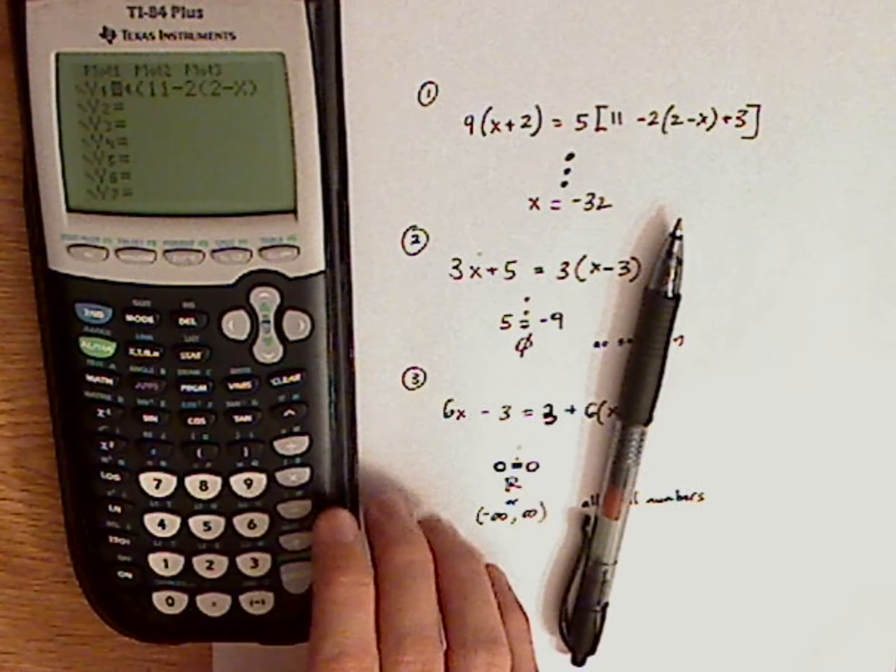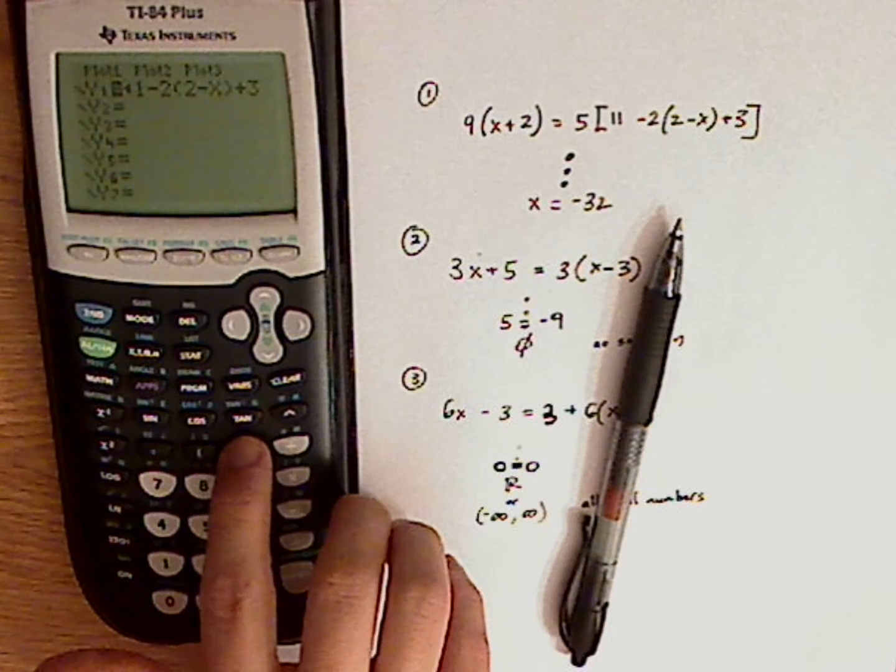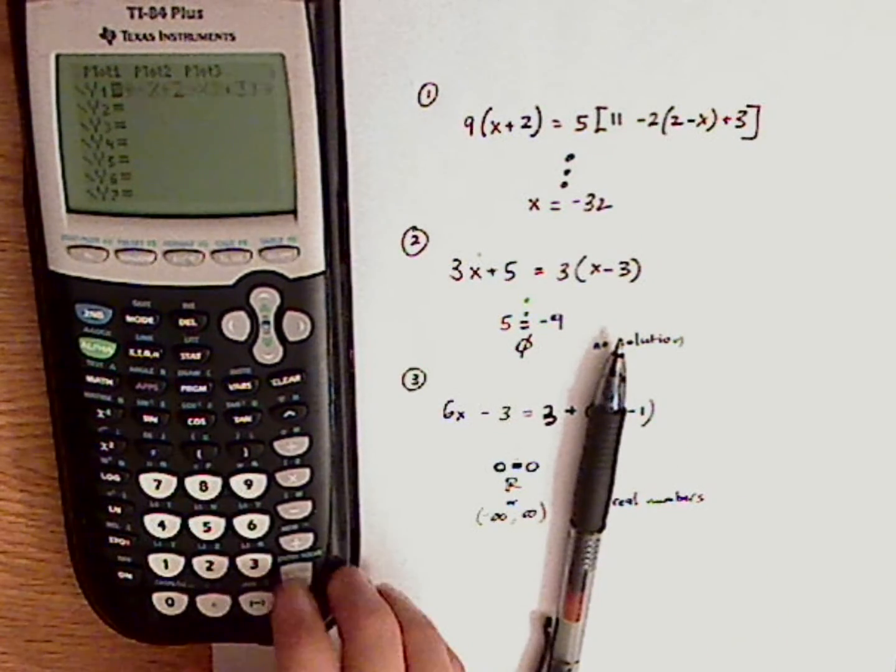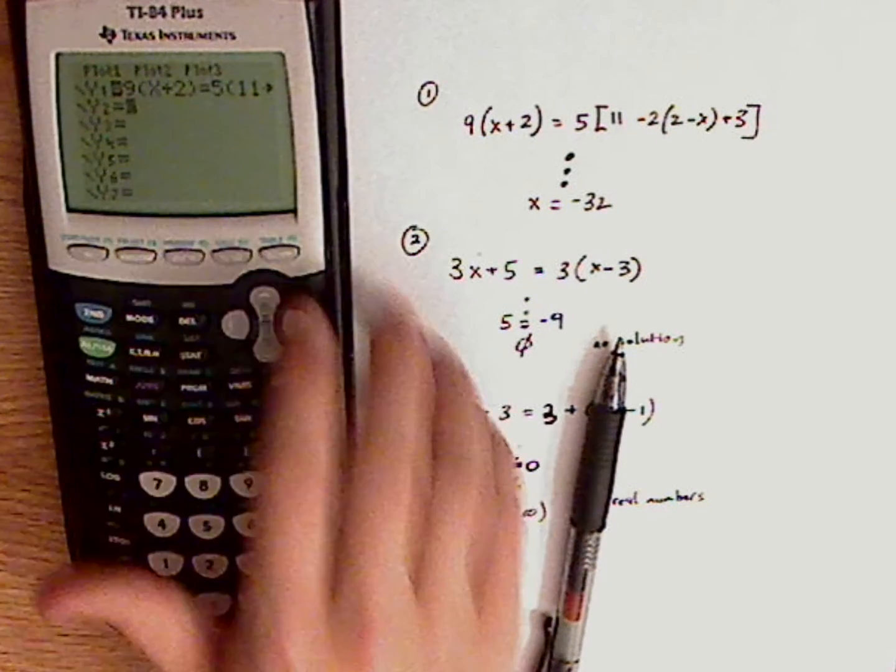2 minus x, close parentheses, plus 3, and then close parentheses again for that bracket. Now it's going to graph.